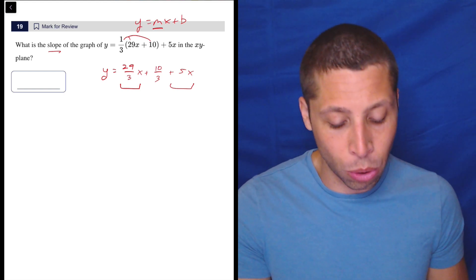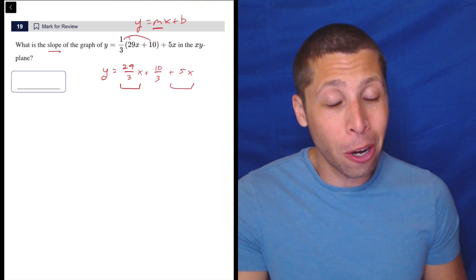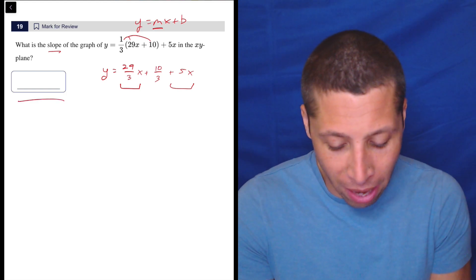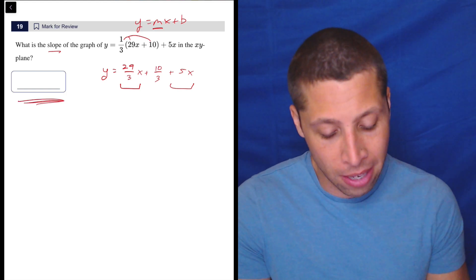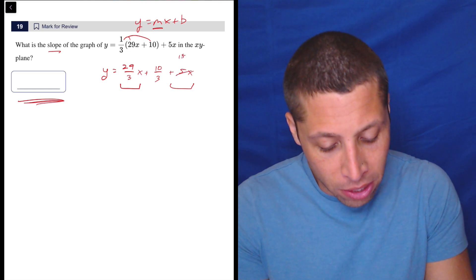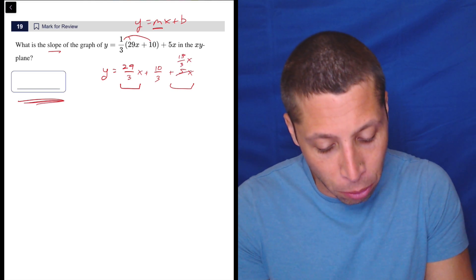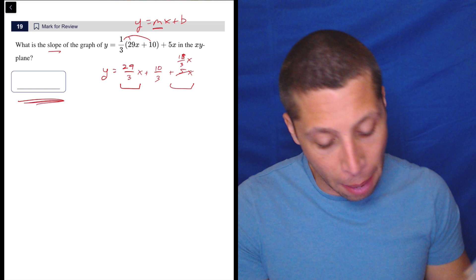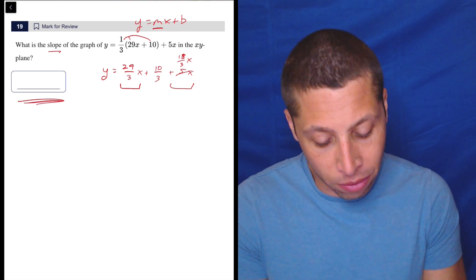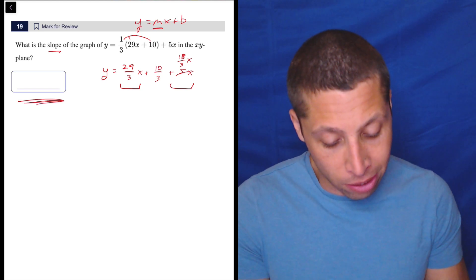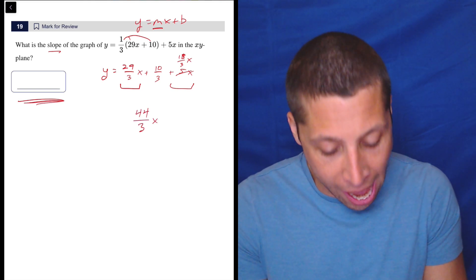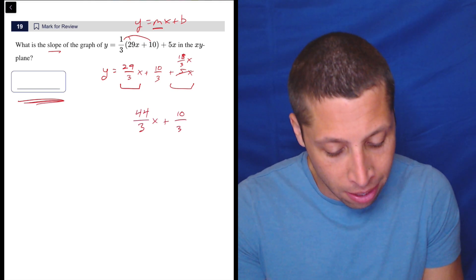Again, we could go to decimals, we could turn this into decimals. The problem with thirds, though, is then they're repeating decimals. So that makes me nervous, especially when we have one of these student produced responses. So let's turn the 5x into 15 thirds x. Multiply by 3 on the top and the bottom. And now we can combine easily. So what is 29 plus 15? Well, 30 plus 15 is 45. So that's going to be 44 thirds x plus 10 thirds.